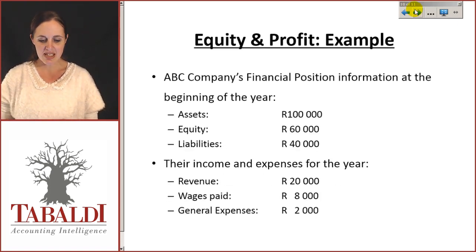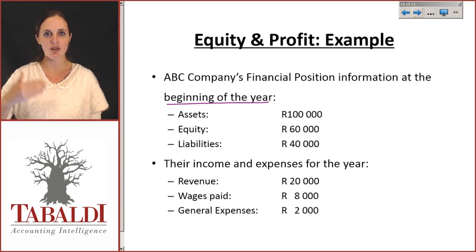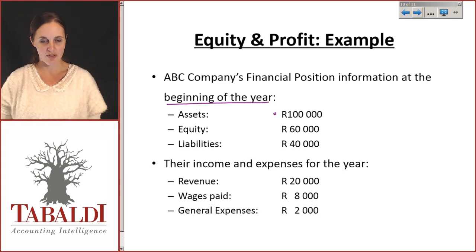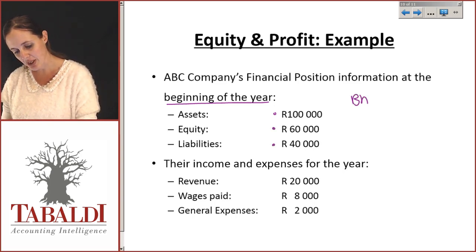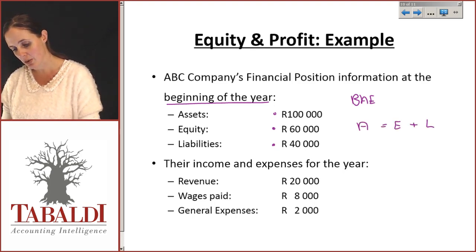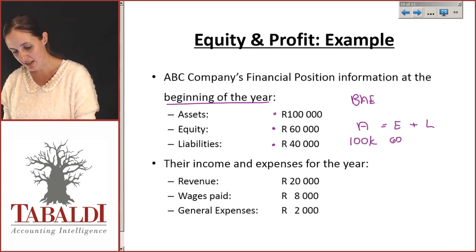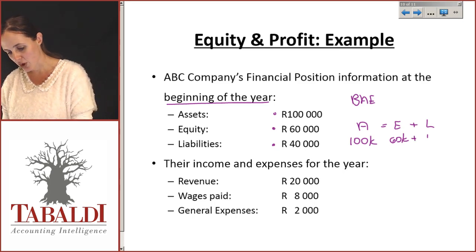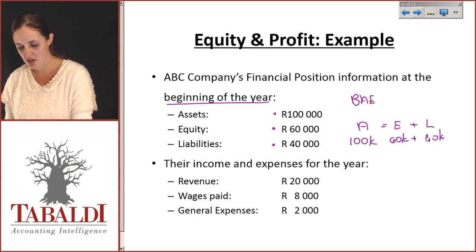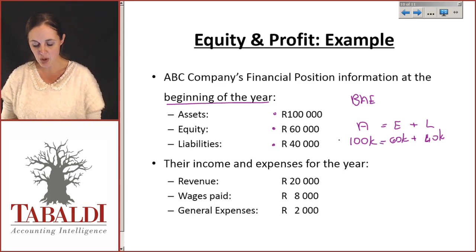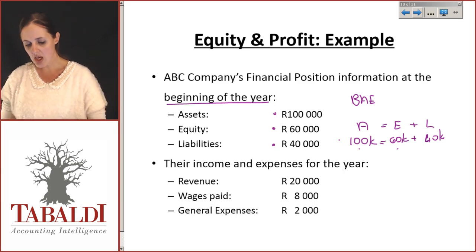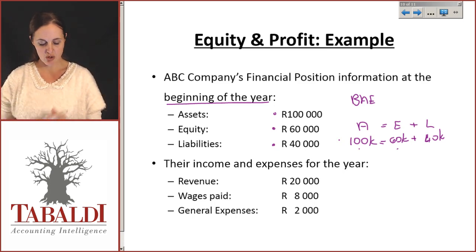You're going to have to be able to do calculations, so take a look at this example. ABC's financial position at the beginning of the year: they started with 100,000 Rand worth of assets, equity of 60,000, and liabilities of 40,000. Looking at the basic accounting equation — assets equals equity plus liabilities — that means 100,000 equals 60,000 plus 40,000. That is their financial position at the beginning of the year, and our assets equal our equity plus liabilities.